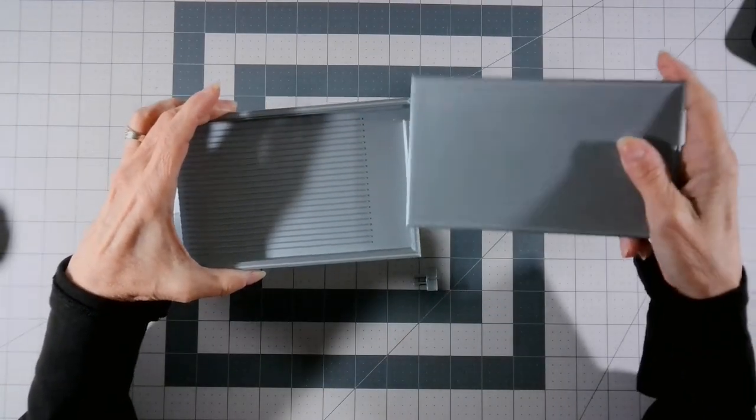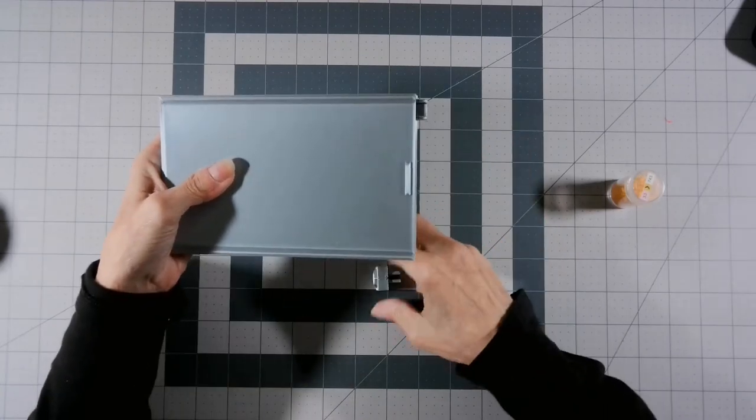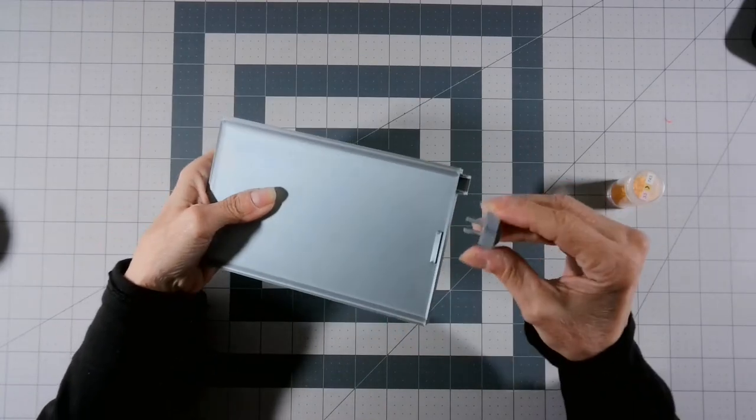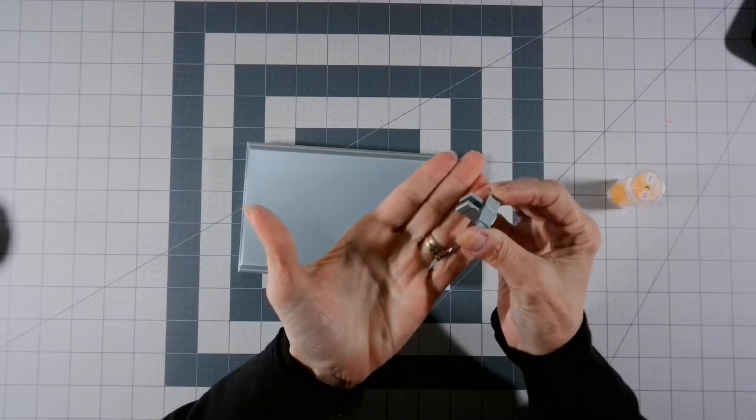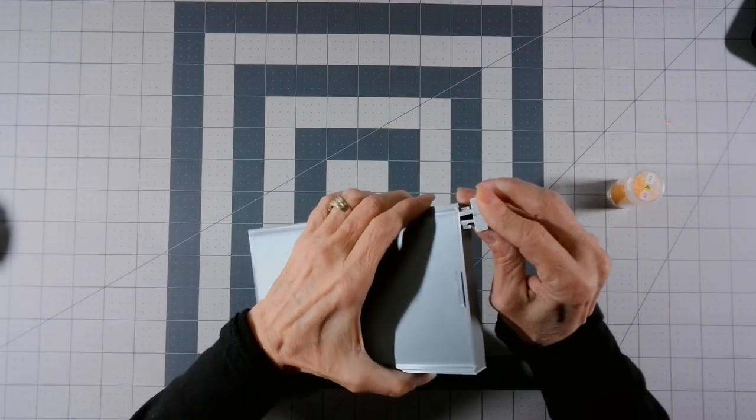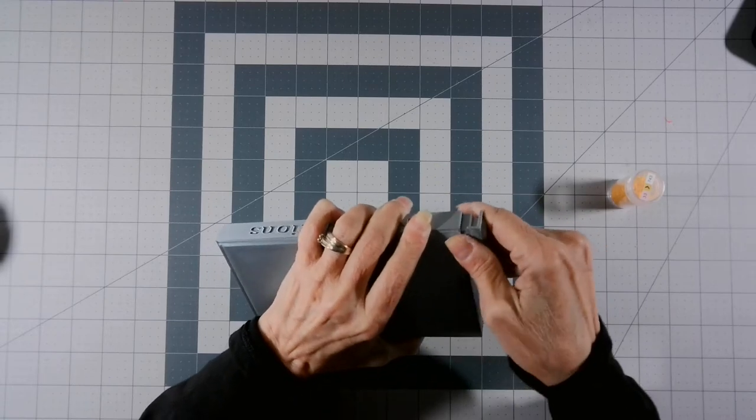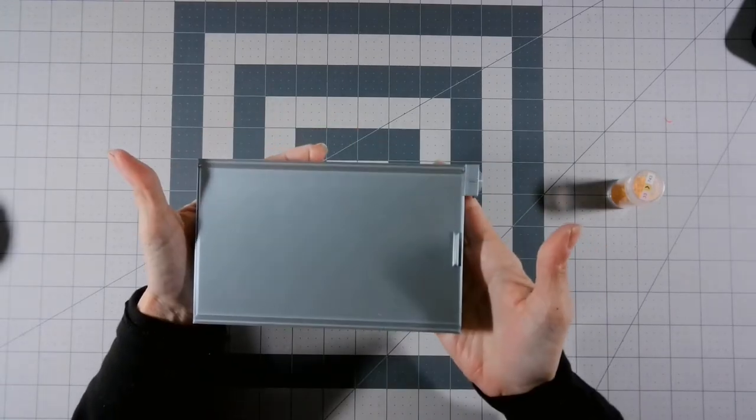You slide the lid on, take the plug, again make sure the groove is facing the inside of the tray, and you pop it into place. Just like that.